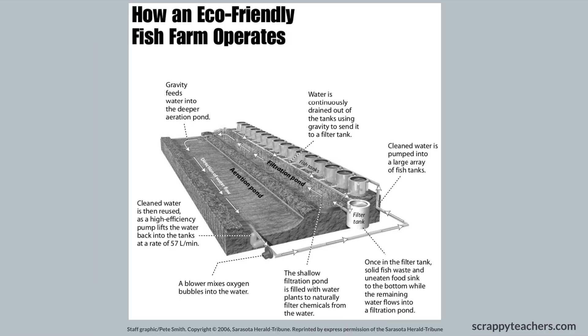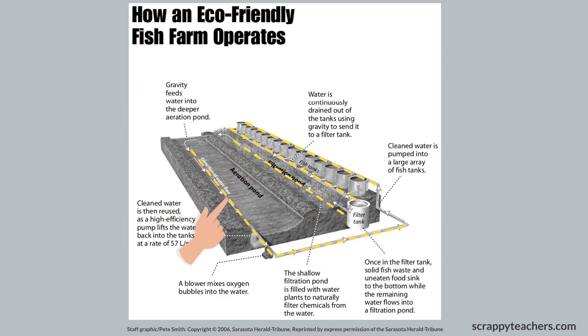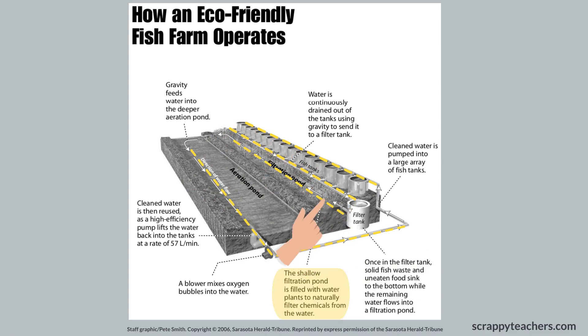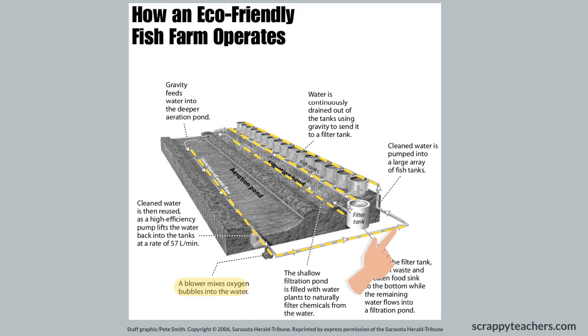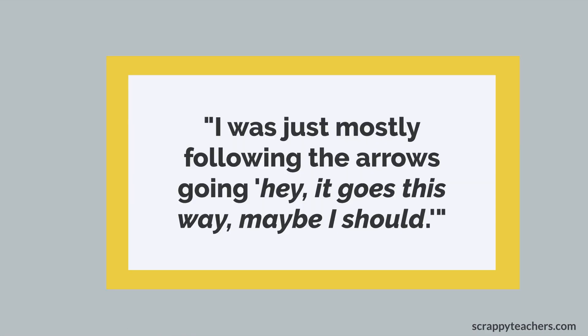For this particular graphic text, the most effective approach was to follow the arrows. It might be hard to see the arrows on your screen, so I'll highlight them for you. The arrows mark a somewhat convoluted path, but following the arrows is important because that's the path of the water filtration system. Those readers adjusted their reading strategies to fit the text, as explained by this student: "I was just mostly following the arrows going, hey, it goes this way, maybe I should."